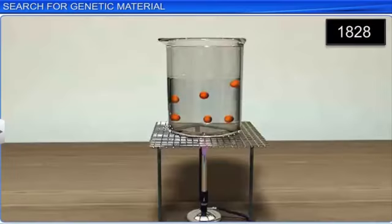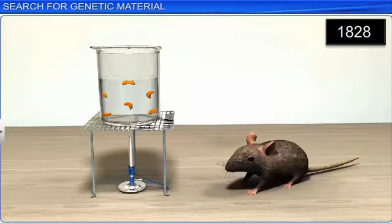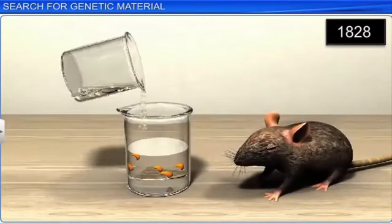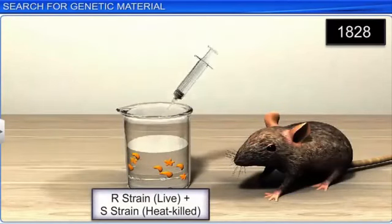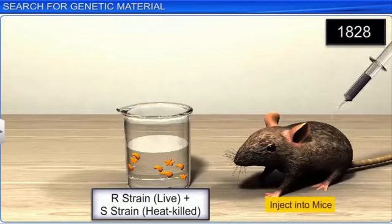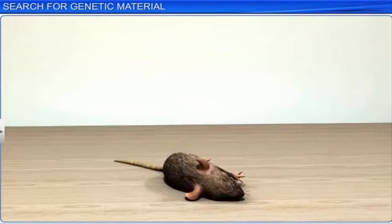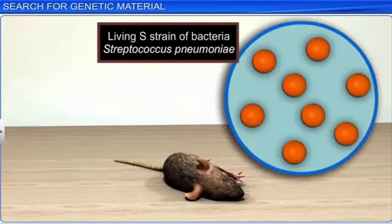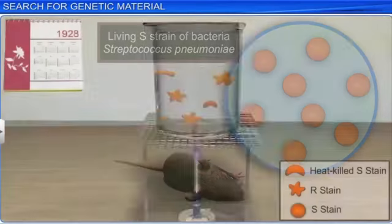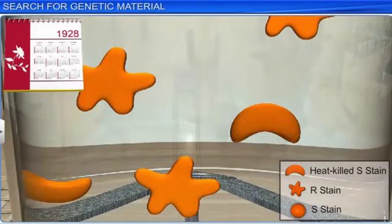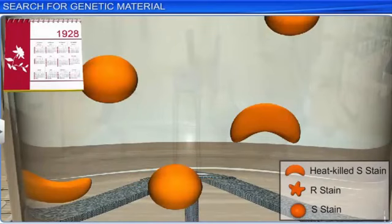Moreover, Frederick also found that heating killed the bacteria. So when he injected heat-killed S strain bacteria into the mice, they did not die. On the other hand, when he injected a mixture of R strain bacteria and heat-killed S strain bacteria, the mice died. Surprisingly, he even recovered the living S strain of bacteria from the dead mice. On the basis of this experiment, Frederick concluded that the heat-killed S strain bacteria had somehow transformed the R strain bacteria.